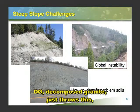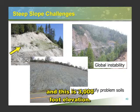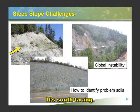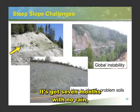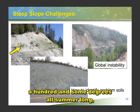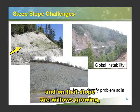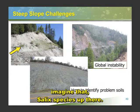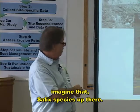DG — decomposed granite. Just throw this in. This is 3,000-foot elevation. It's south-facing. It's got seven months with no rain, 100-and-some degrees all summer long. And on that slope are willows growing — imagine that. Salic species up there.